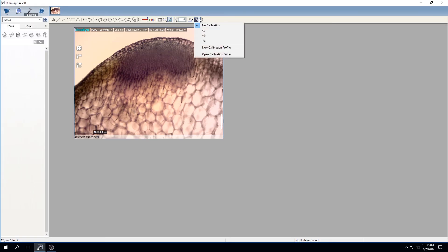With the calibration icon, click on the 4x, which is the corresponding magnification calibration. From that moment, you should see a scale bar showing on the bottom left corner.